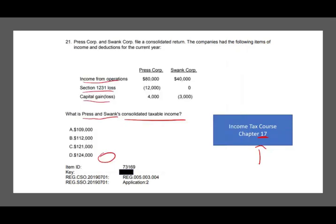What is the consolidated taxable income? Let's start with the 80 and the 40. Do we consolidate those two? Of course. So taxable income for the two is 120,000. Now, we have section 1231 loss - we can deduct 12,000. Are we done yet? No, we have capital gains and capital losses. We have capital gain of four, capital losses of three, so we still have a net capital gain of a thousand. So 120 minus 12 plus one equals 109. The answer is 109.